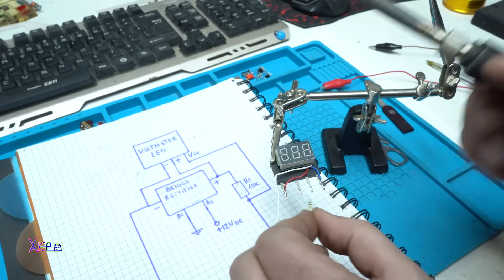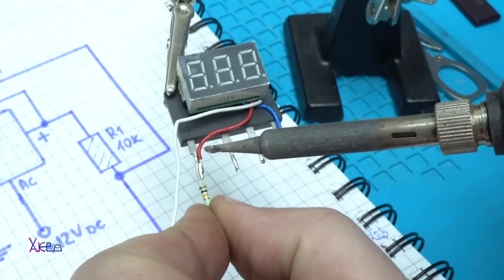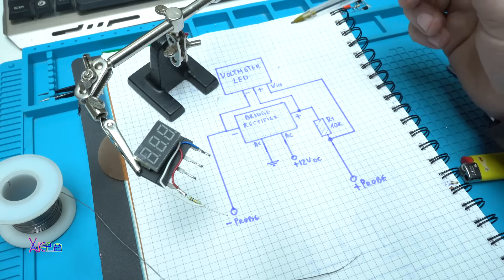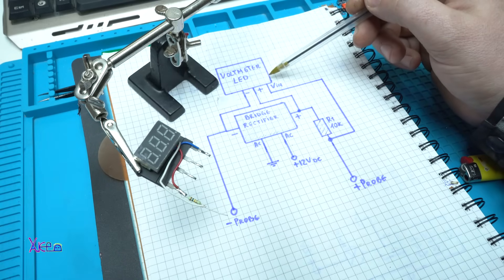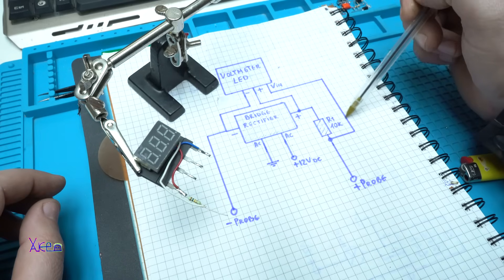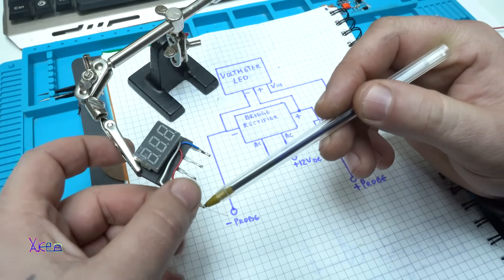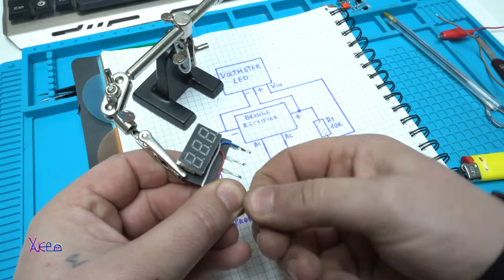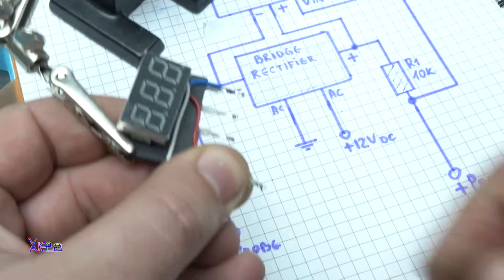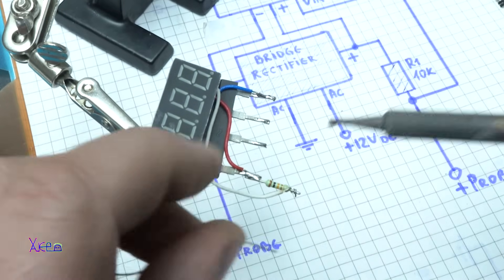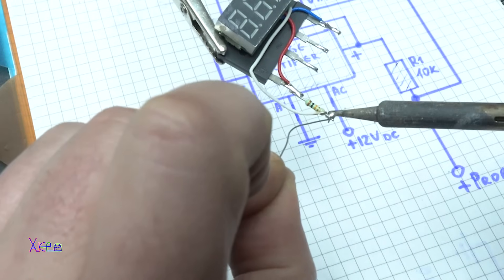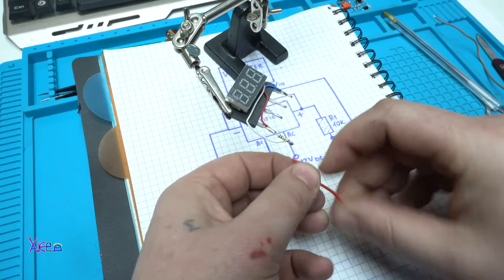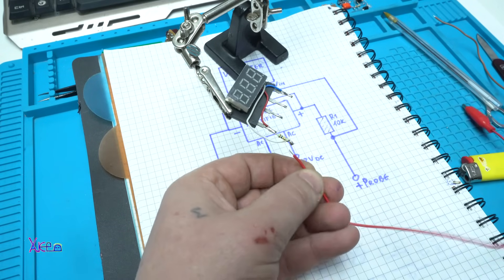The 10 kilo ohm resistor goes to the positive of the bridge rectifier. Now the voltage in wire from the LED voltmeter goes directly on the resistor right here. I'm gonna twist it like this. Solder.